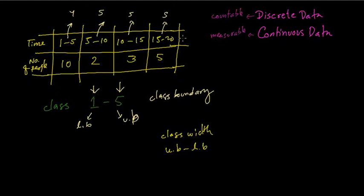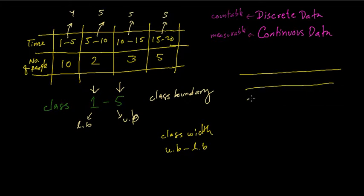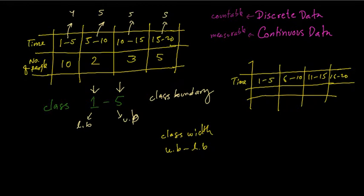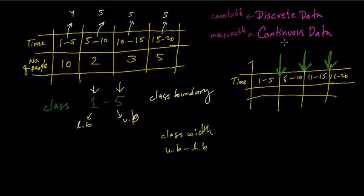Whenever we are talking about continuous data, it is extremely important that the data is continuous; otherwise there will be an error. For example, if the data was given as 1 to 5, then 6 to 10, then 11 to 15, then 16 to 20 — although time is continuous, the data has a gap in between. Continuous data is not supposed to have any gap; it is supposed to move continuously.